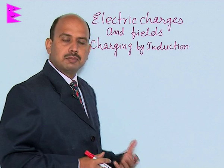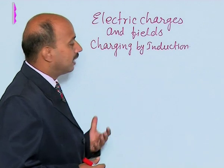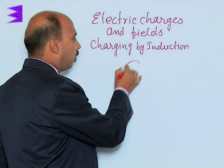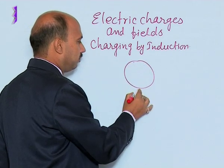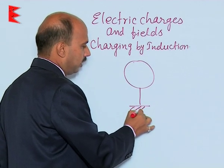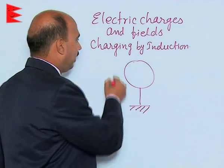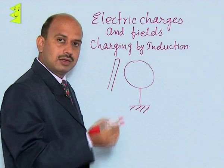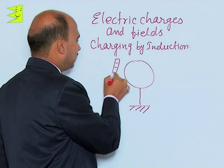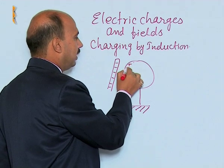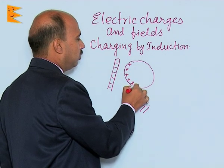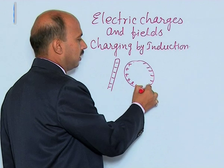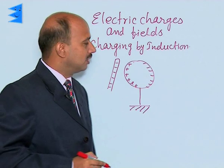Now let us take another example of charging by induction where the body becomes positively charged. Suppose you have a metallic sphere placed on an insulated stand, and we bring near it an ebonite rod which is negatively charged. Positive charges are induced to the nearer end and negative charges are induced to the farther end until equilibrium is achieved.